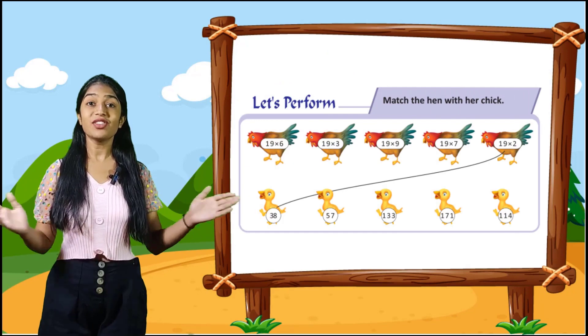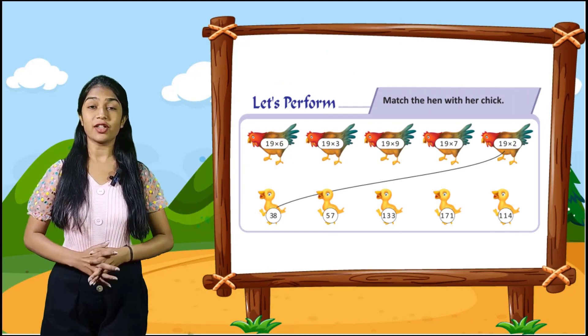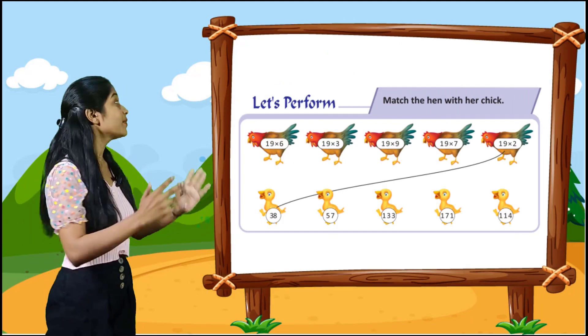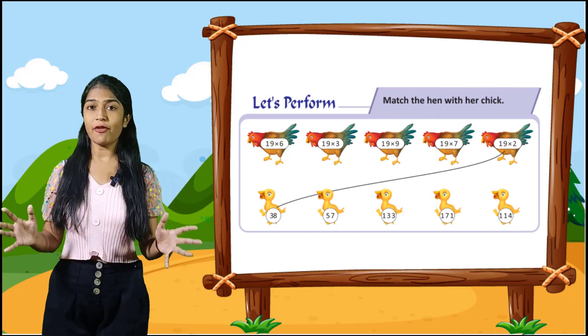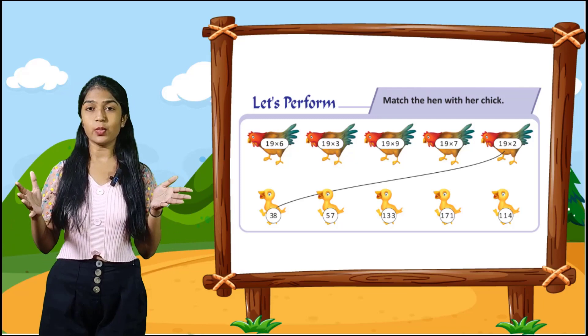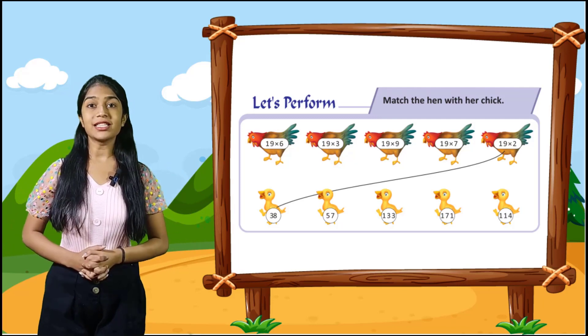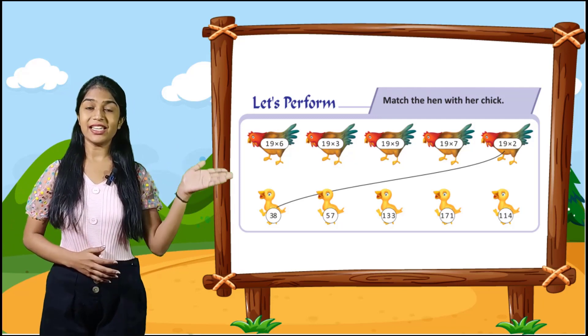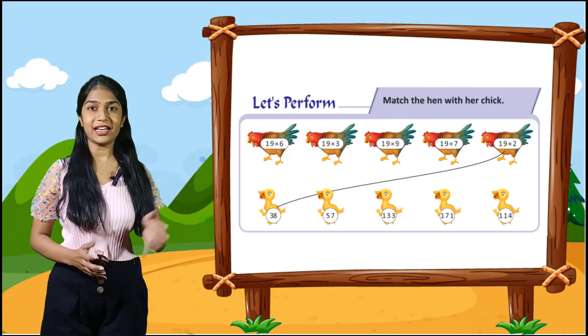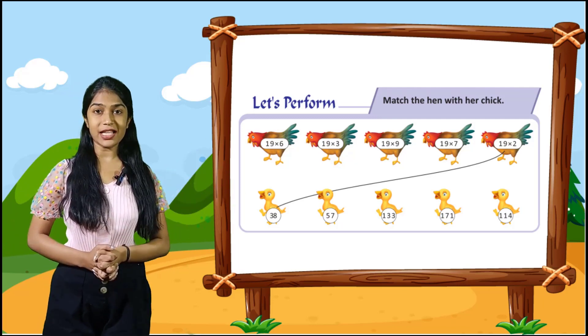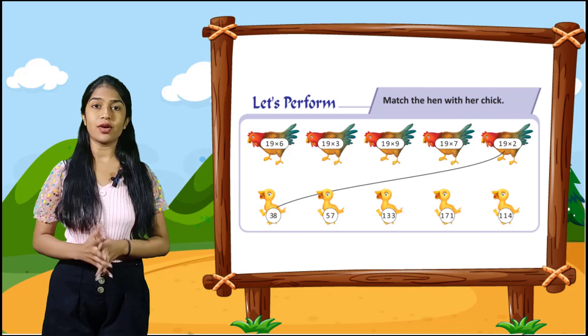So now let's perform. Match the hand with her chick. Here are some hands given to you and you have to match them. 1 is done for you: 19 into 2 that is 38. Rest you have to do yourself.